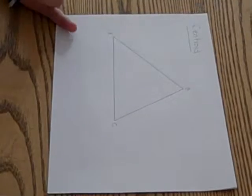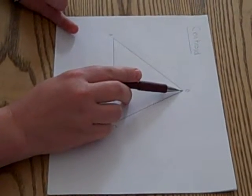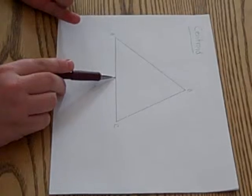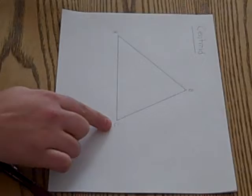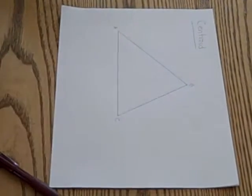First we need to remember that the median goes from the vertex to the opposite midpoint. So the first thing I need to do is find the midpoint of each of my three segments.